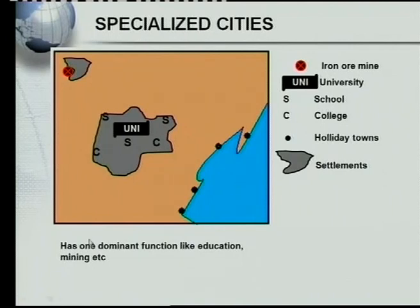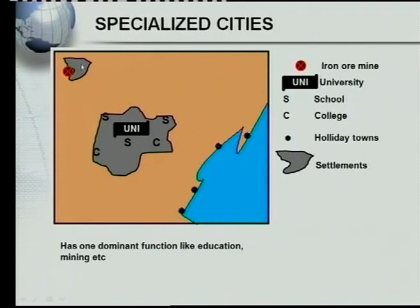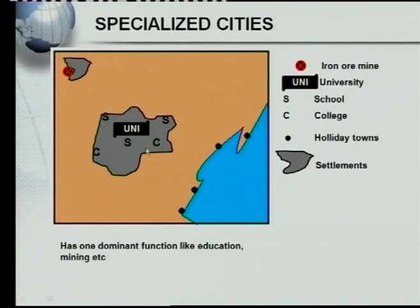The last type is a specialized town or specialized city, which has one dominant function — like education or mining. Here we have a settlement that has grown around an iron ore mine. In another example, we have a university, schools, and a college — this is a specialized town where the dominant function is education. Stellenbosch, where we are presenting from, is a good example of an educational specialized town.